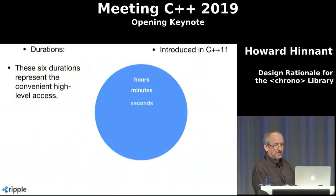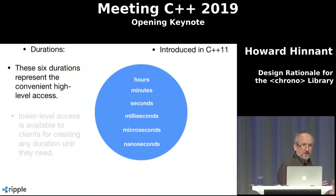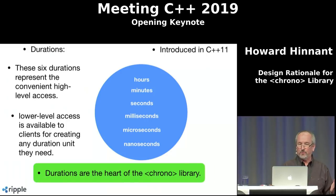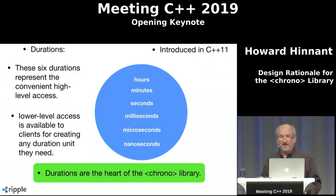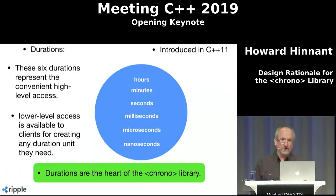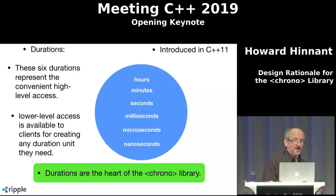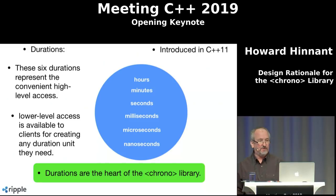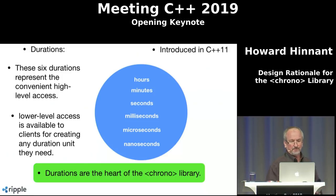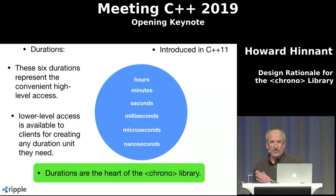I'm going to talk a little bit about what Chrono is and what was introduced in C++11. This won't be a detailed tutorial on Chrono — that's a whole hour talk in itself. But at the heart of the Chrono library there's durations. A duration is just a period of time, like three minutes or three hours. Chrono introduced six durations, and clients can also program their own custom duration types.